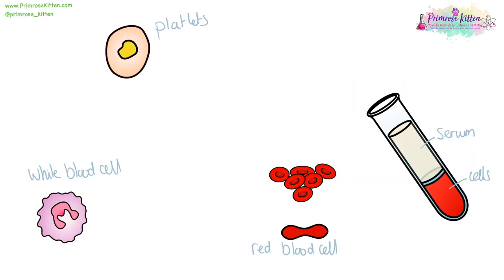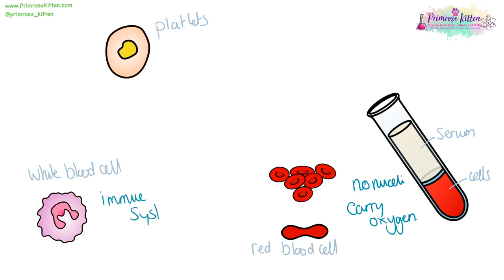Blood is made up of several components. The actual color of blood is a pale yellow color — this is the serum, the liquid component of the blood. The cells give it its actual color. Red blood cells, the cells that give blood its color, have no nuclei, and this is so they have more space to carry oxygen, which is their main function. White blood cells are part of the immune system. And platelets are fragments of cells, and they are important for things like clotting.